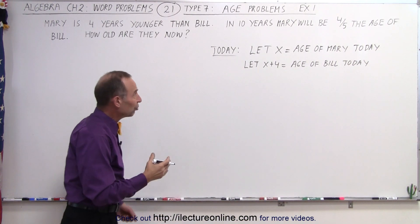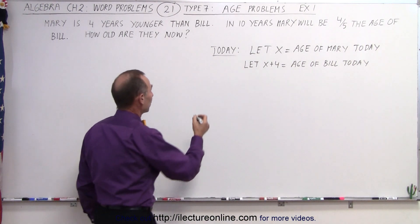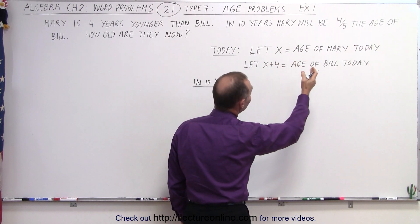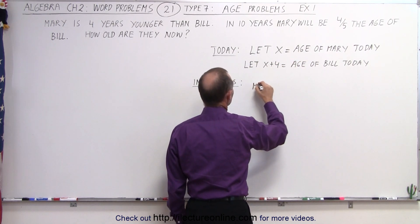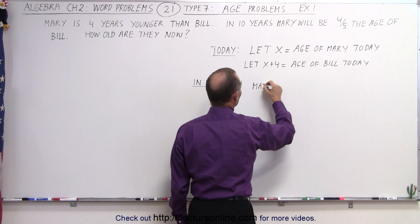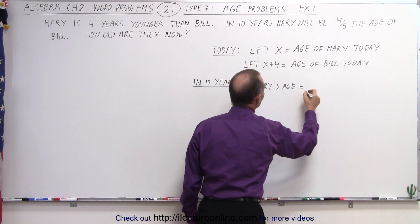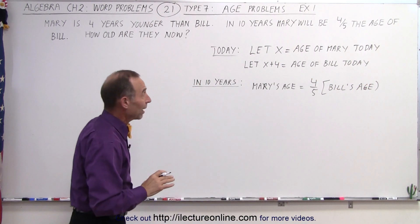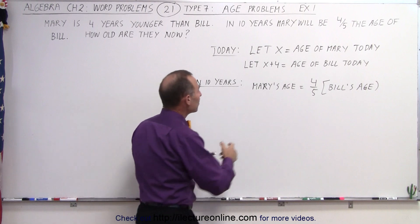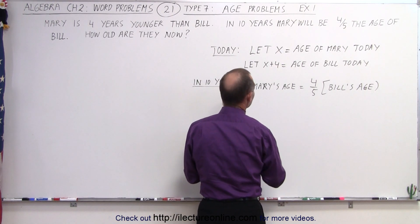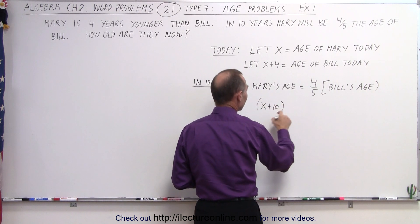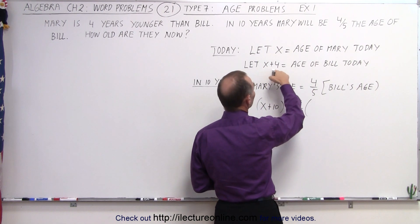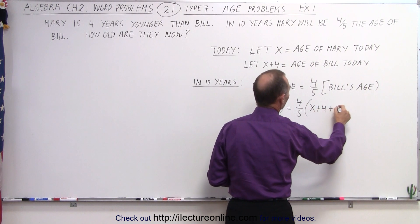In this problem they give us another relationship between the ages in 10 years. The relationship is that Mary's age will be equal to four-fifths Bill's age. If Mary's age today is x, then x plus 10 will be Mary's age in 10 years, and that will equal four-fifths of Bill's age in 10 years. Bill today is x plus 4, so in 10 years he will be x plus 4 plus 10.